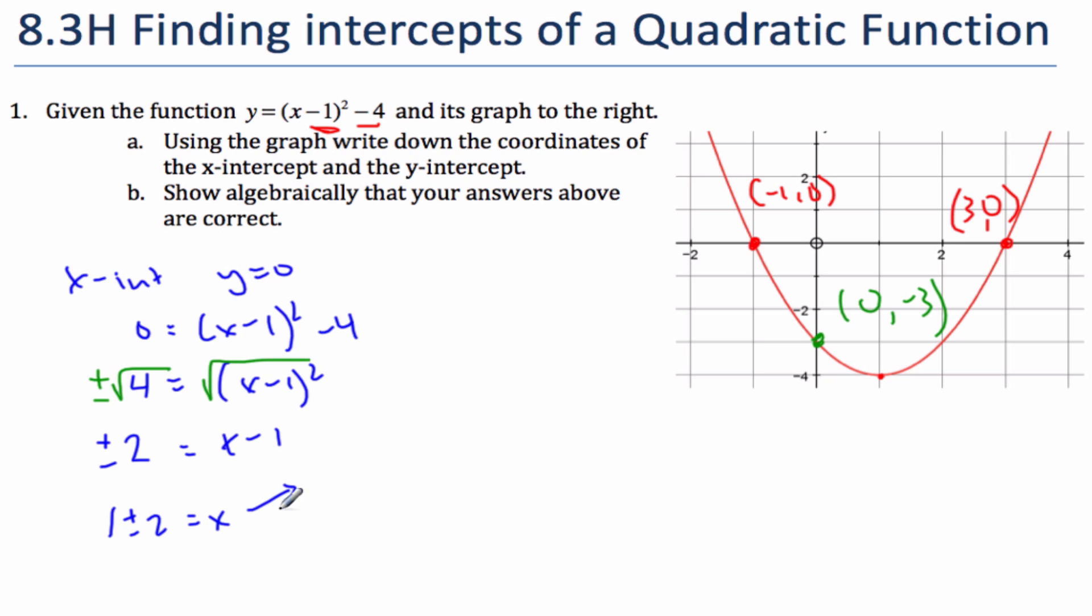And so now this is two things. x could be 1 plus 2, which is 3. And x could be 1 minus 2, which is negative 1. And those are my two x-intercepts. So I get the coordinate (3, 0) because I said y was 0, or (-1, 0).